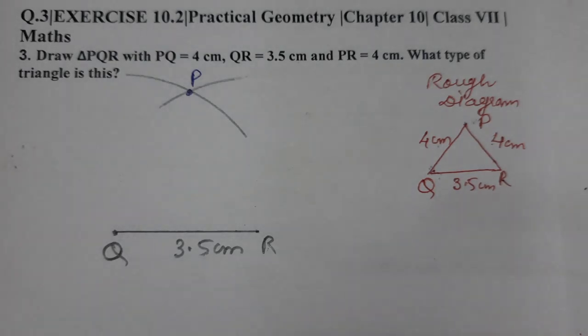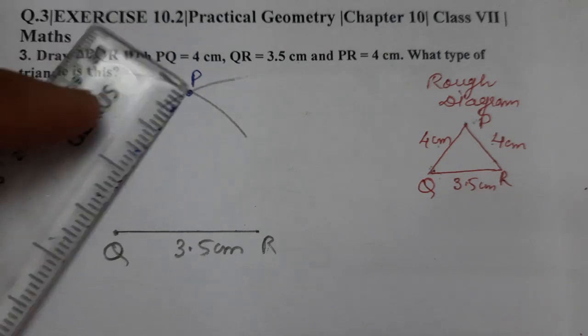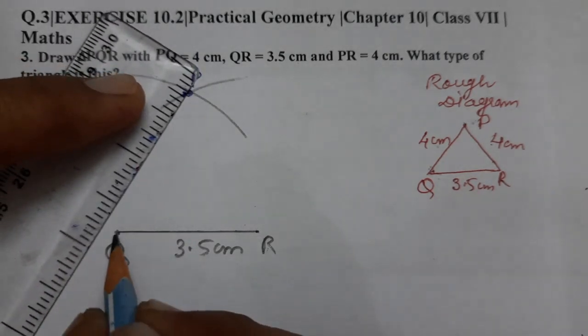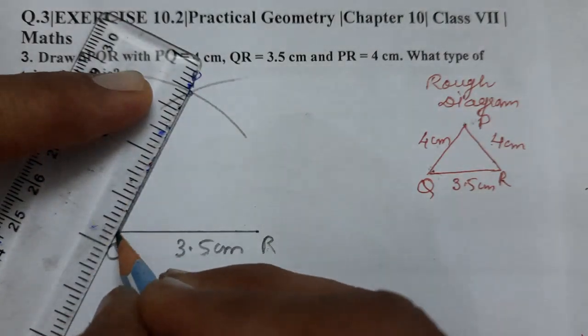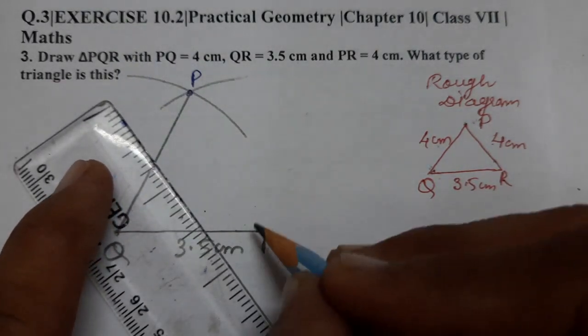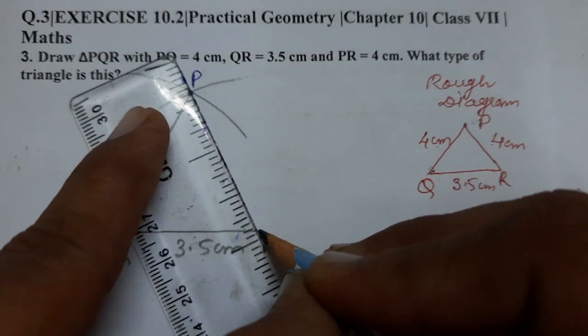Join P to Q and P to R. Let's join P to Q and P to R. We have joined both line segments.